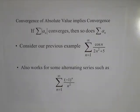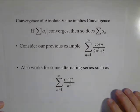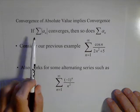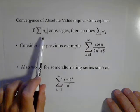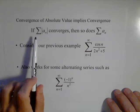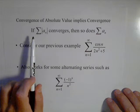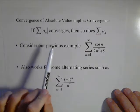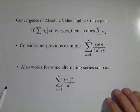In this video I'm going to talk about a test I alluded to in another video: if you can show the absolute value of the terms of a series converge, then the series converges. If the summation of the absolute value of the terms converges, the series is what's called absolutely convergent, but I'm not going to focus on that in this video. I just want to use this test because it will handle some series that our other tests can't.